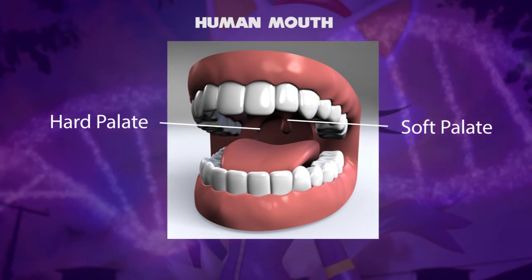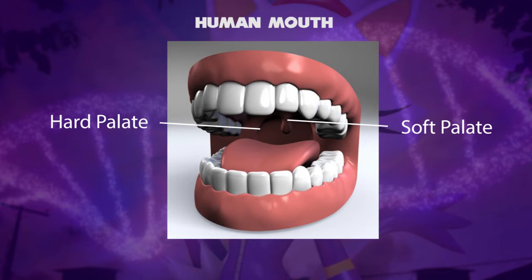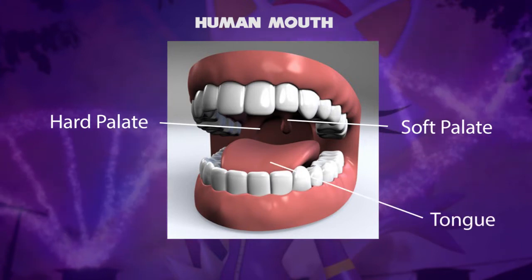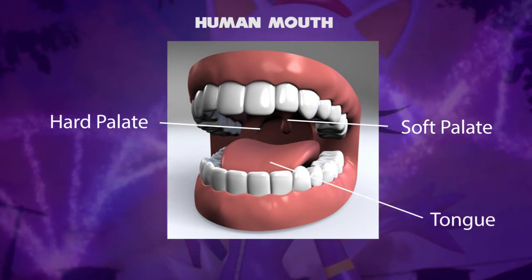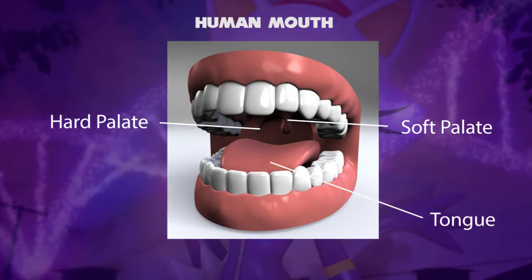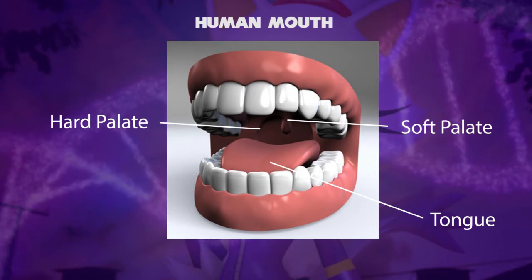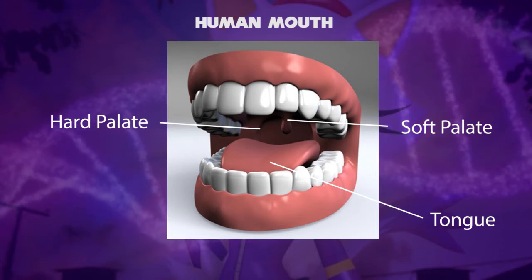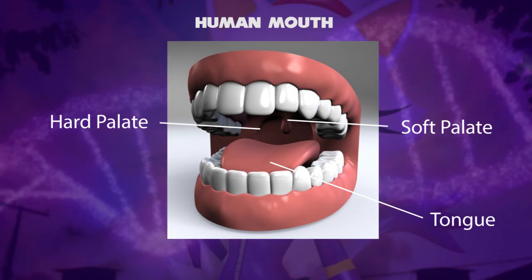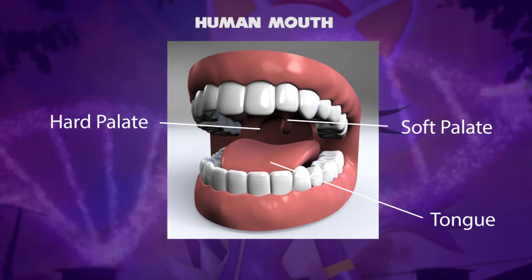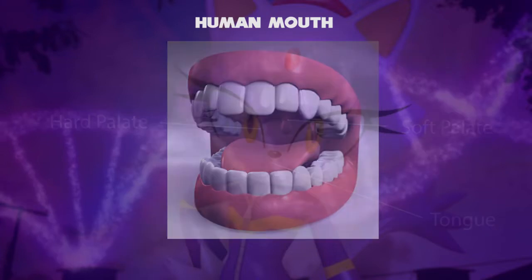The tongue is a muscular organ in the mouth of a typical tetrapod, which manipulates food for mastication and swallowing as part of the digestive process, and is the primary organ of taste.